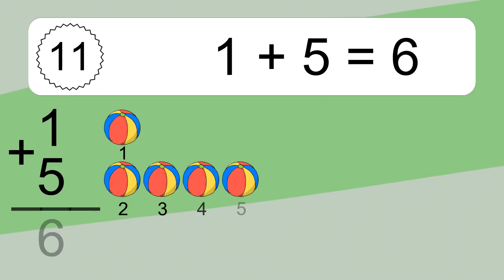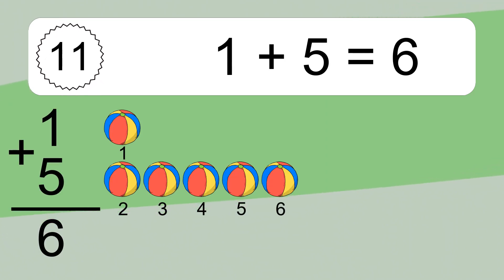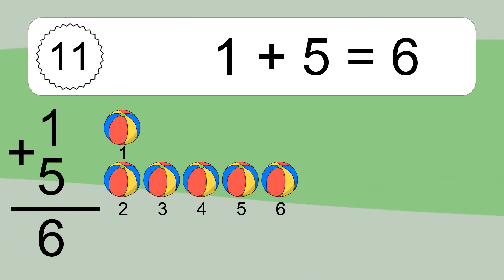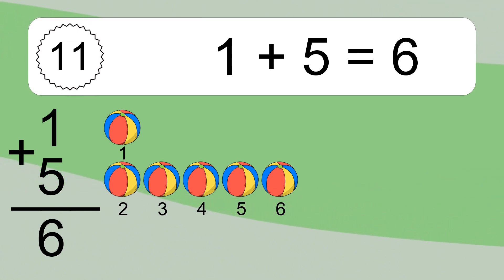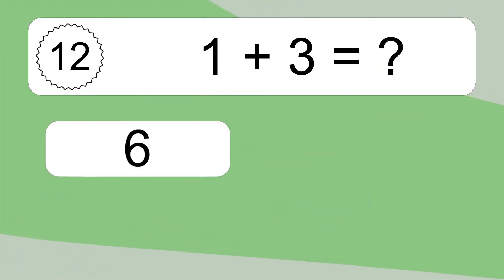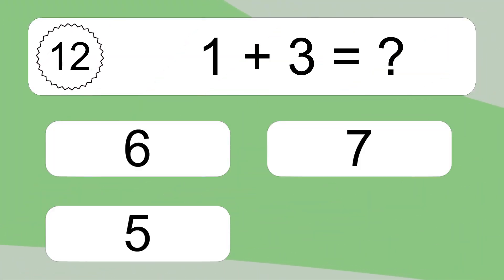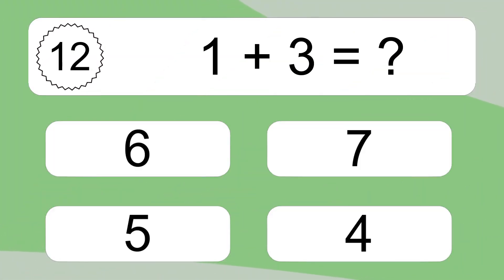1 plus 5 equals what? 1 plus 5 equals 6. Let's count it: 1, 2, 3, 4, 5, 6.